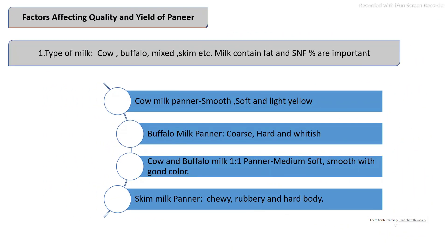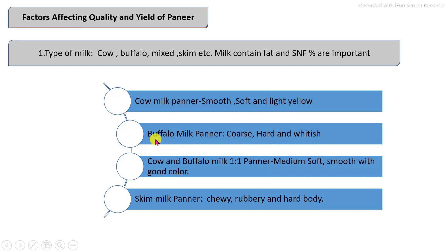The main factors which affect the quality and yield of paneer: first is the type of milk and its fat and SNF percentage, which are very important. If cow milk is used, the paneer produced is very smooth in texture, soft, and light yellow in color. If buffalo milk only is used, the paneer produced is coarse in texture, hard, and whitish in color. If a 1:1 proportion of cow and buffalo milk is used (mixed milk), the paneer produced is medium soft, smooth, with good color.